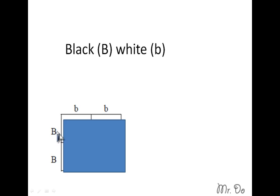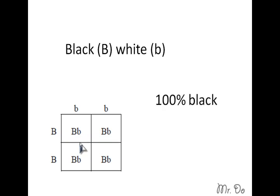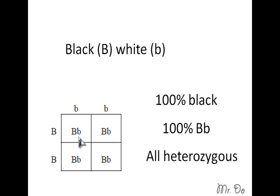So first you put them on the Punnett square. Over here you have one big B and one small b, and here you have one big B and one small b, so they're all the same. So 100% of them, the phenotype will be black because big B is dominant, which leads to 100% big B small b, also known as all heterozygous.